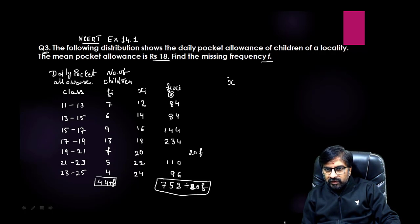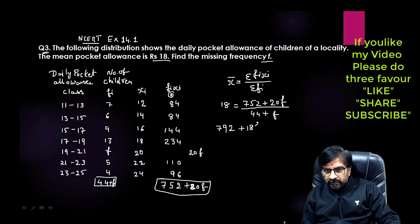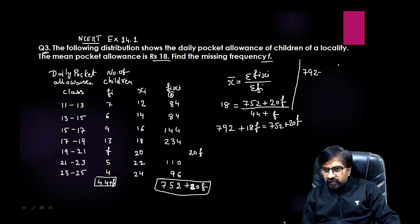Now we need sum of fi also. Adding frequencies: 7, 6, 13, 9, 8, 5, and f gives us 44 plus f. Our formula for direct method is x̄ = Σ(fi xi) / Σfi. We already have mean equals 18, so 18 = (752 + 20f) / (44 + f). Cross multiplying: 792 + 18f = 752 + 20f. Taking terms with f on one side: 792 - 752 = 20f - 18f, so 40 = 2f.